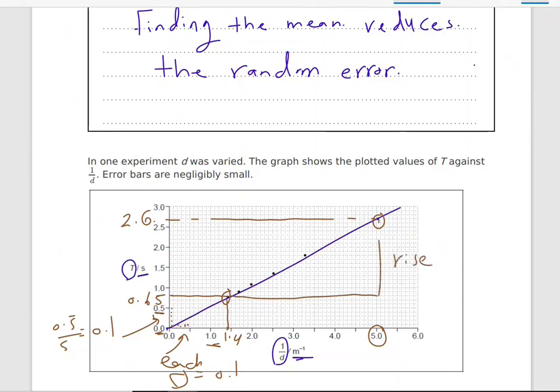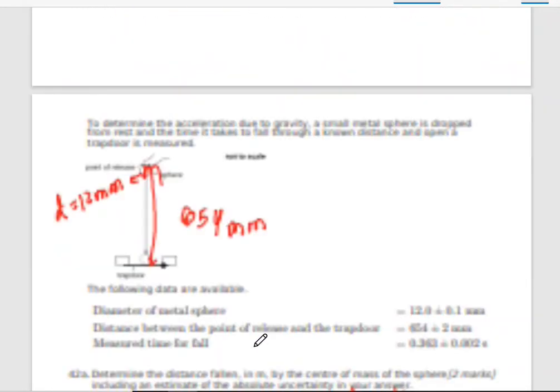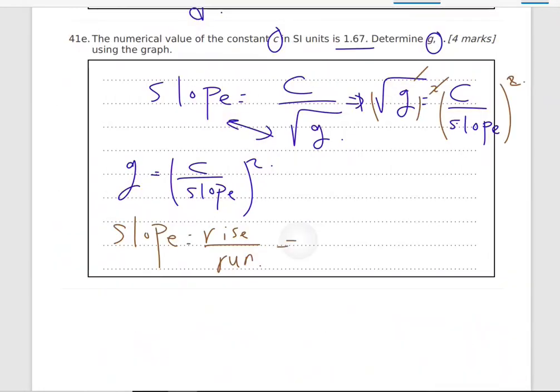So rise over run. 2.6 minus 0.65 divided by five minus 1.4. So the slope, let's write it down. The slope, the slope will be 2.6 minus 0.65 divided by five minus 1.4. This will be 0.54.